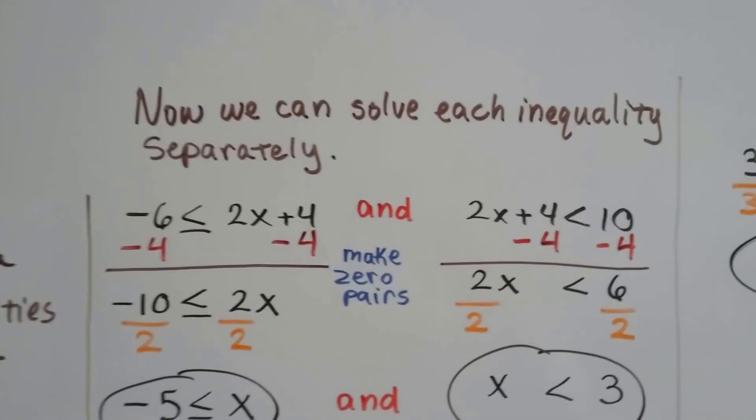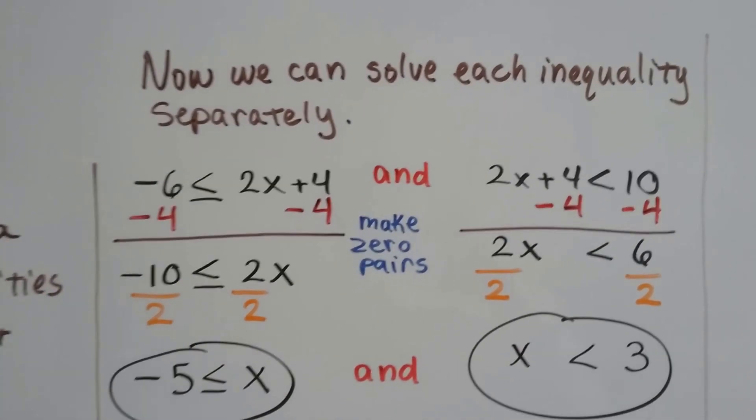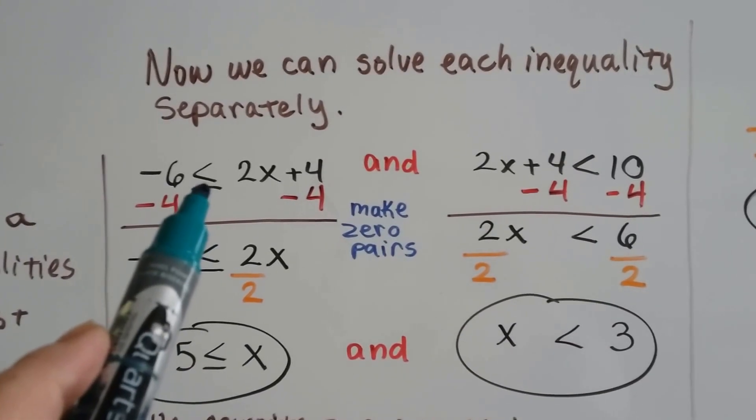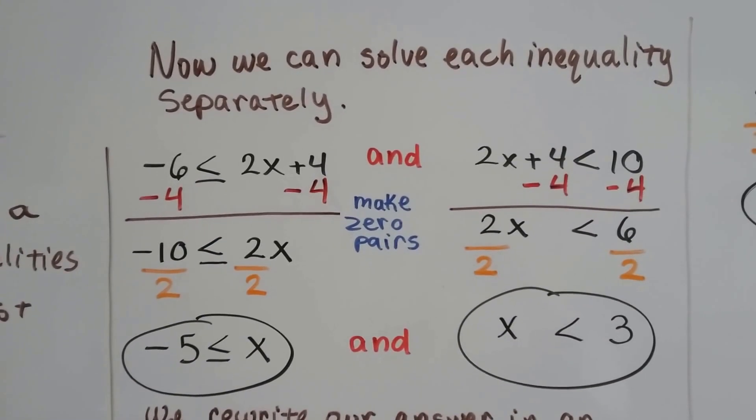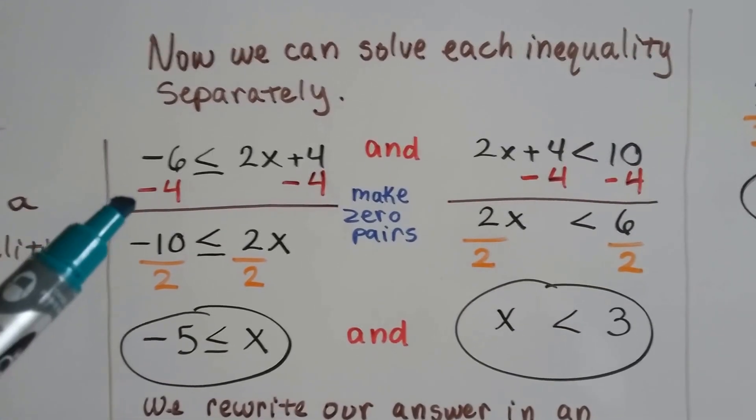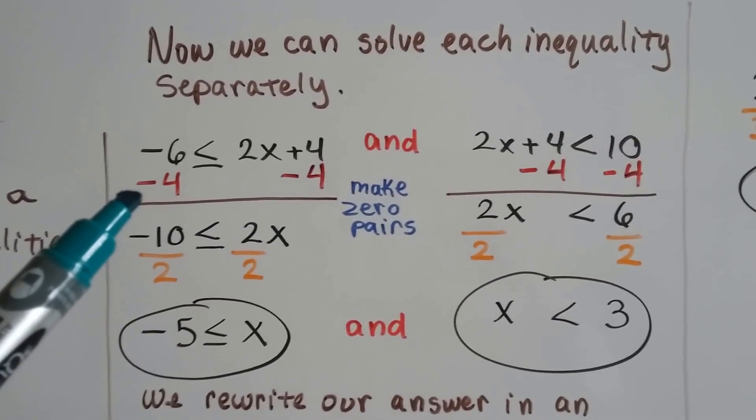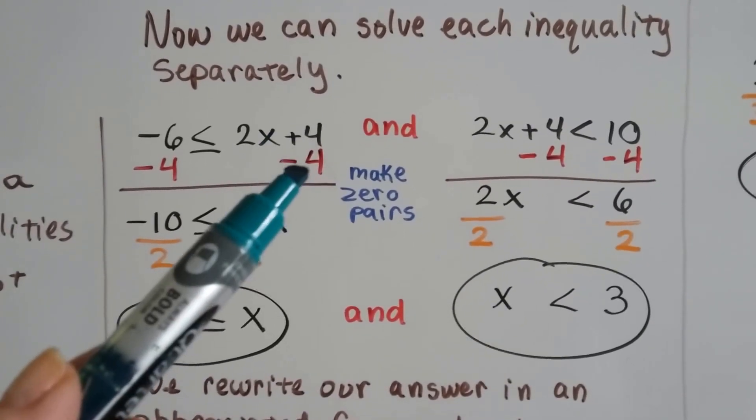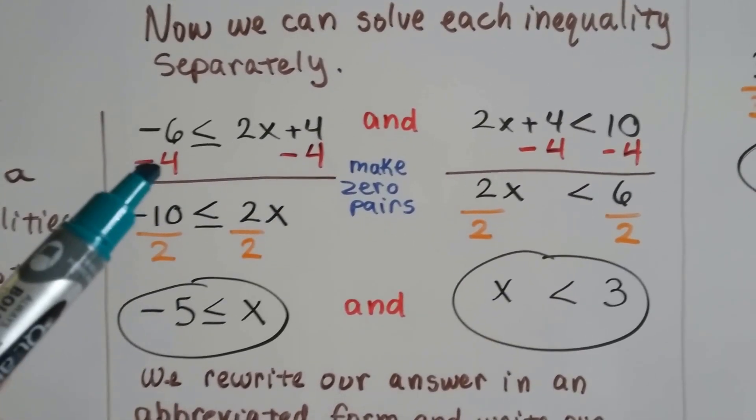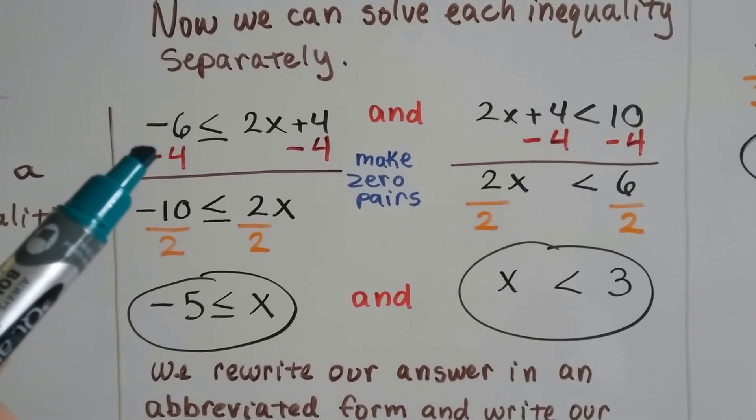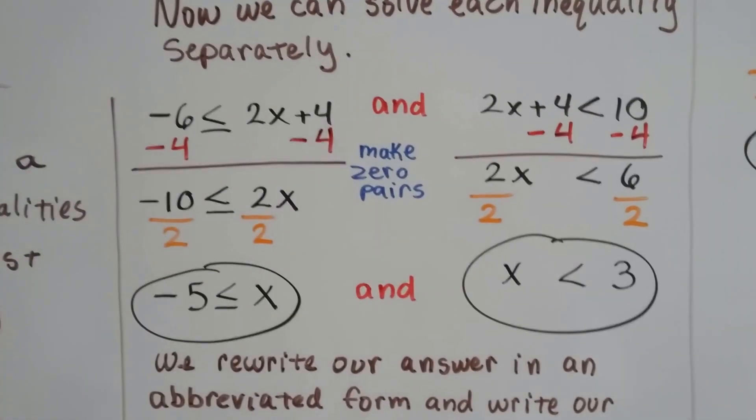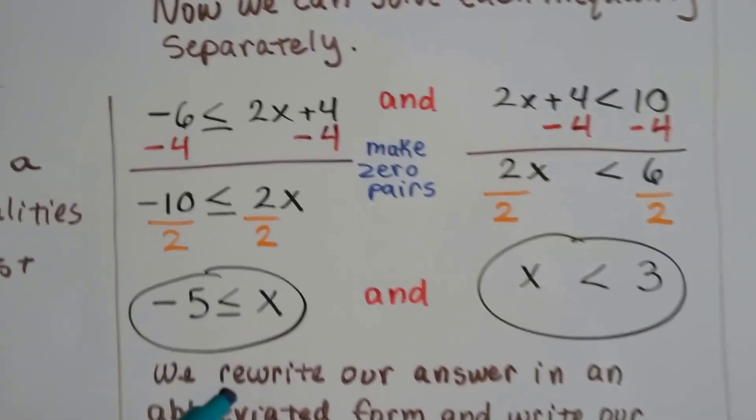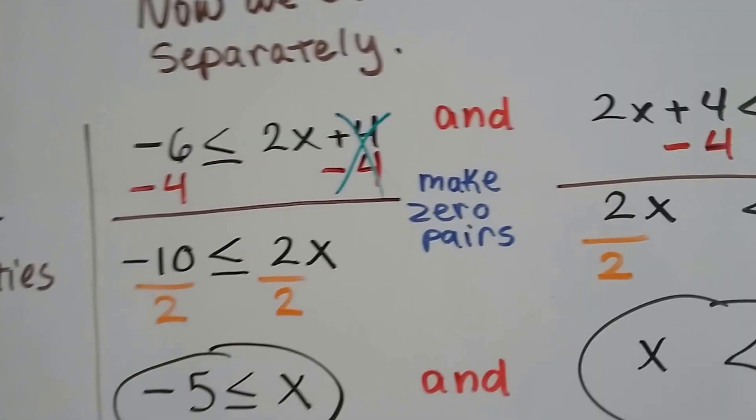Now we can solve each inequality separately. This was the blue side, that was the pink side. We treat that just as if it was an equal sign, just like we've done before. We can use an additive inverse and make a zero pair. So we take away this 4 from this side by doing a minus 4. We'll take away 4 from this side because we have to do the same thing to each side. This becomes a negative 10 on this side, and this becomes just the 2x because we created a zero pair here.